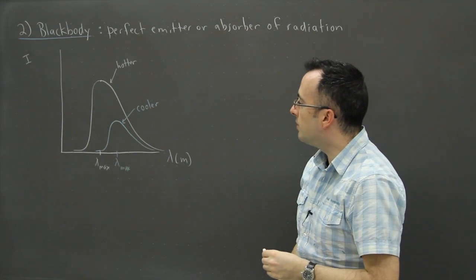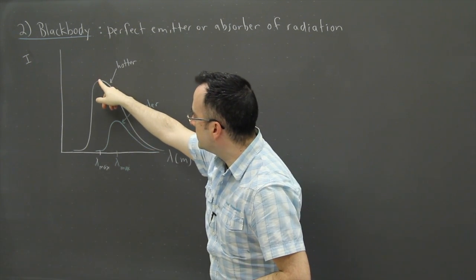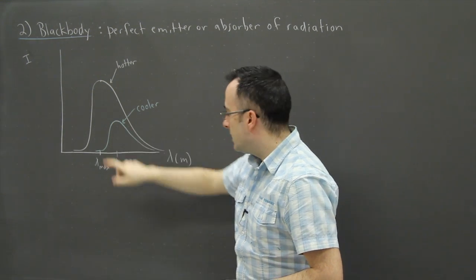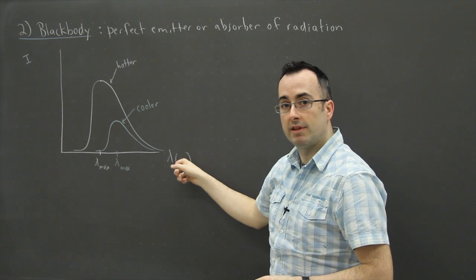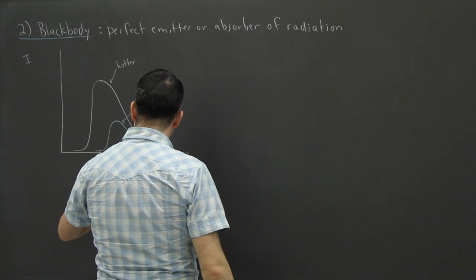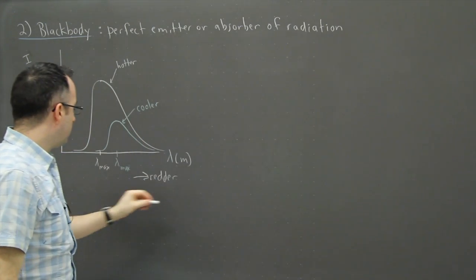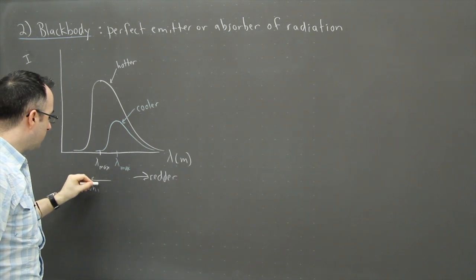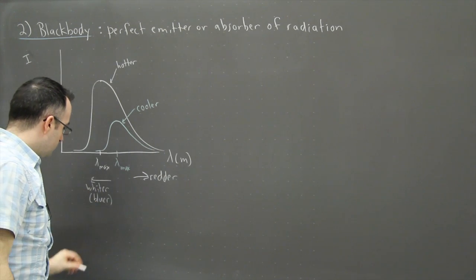Now what's kind of neat is that cooler stars, if you look at what the peak does, the peak goes down and it shifts to the right. In other words, if you know about wavelengths these are larger and larger wavelengths. For example, this right here is more red. In other words, this is like redder, and over here is sort of you could say maybe whiter or bluer.